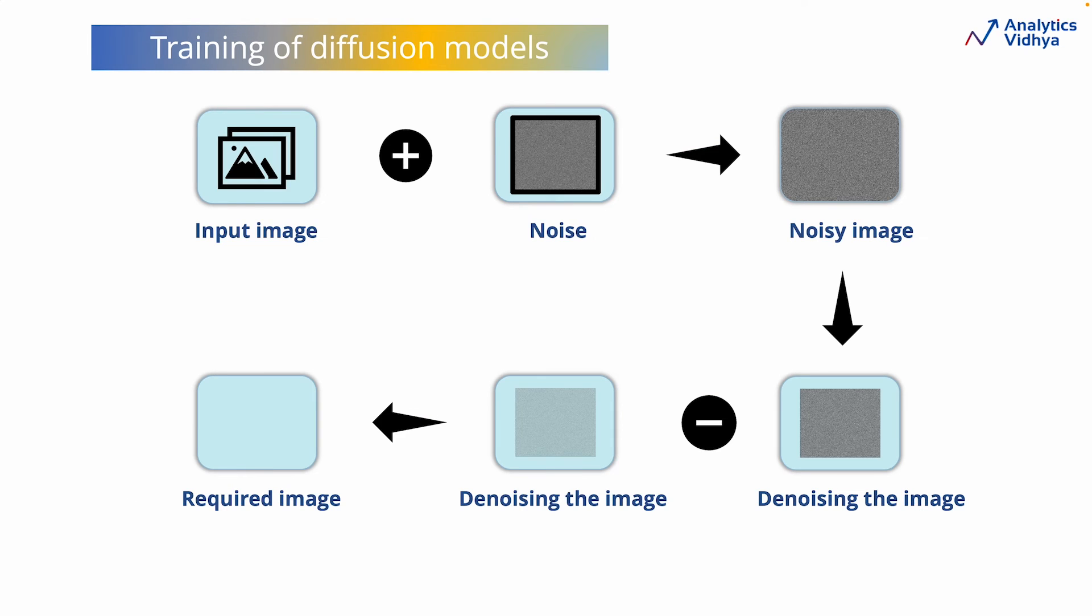During training, these models add noise to the input images and then learn to recreate the original image by denoising them, effectively restoring the original information. This training process enables diffusion models to develop the capability to generate meaningful images from random noise.